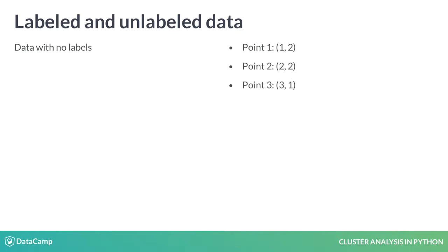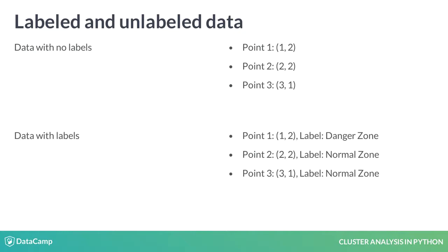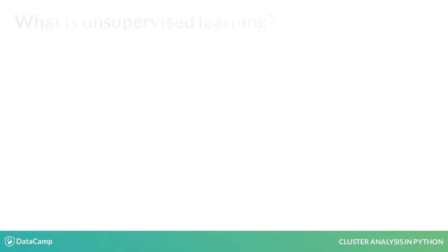At the same time, if we associate each data point with a group beforehand — say normal and dangerous zones — we call it labeled data.